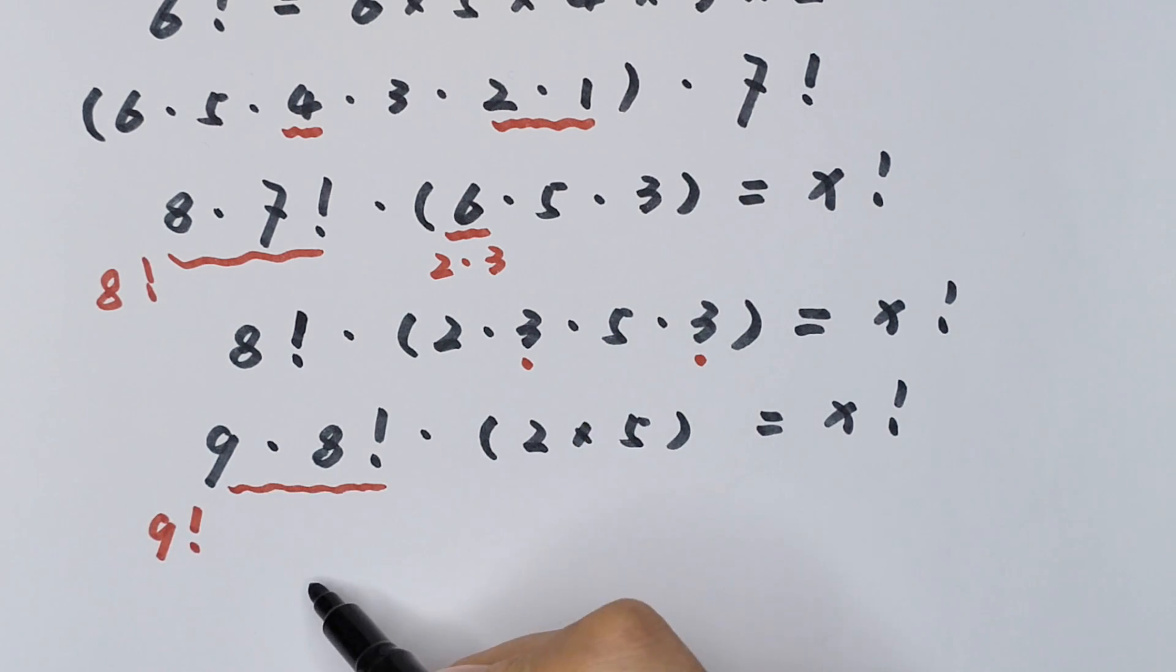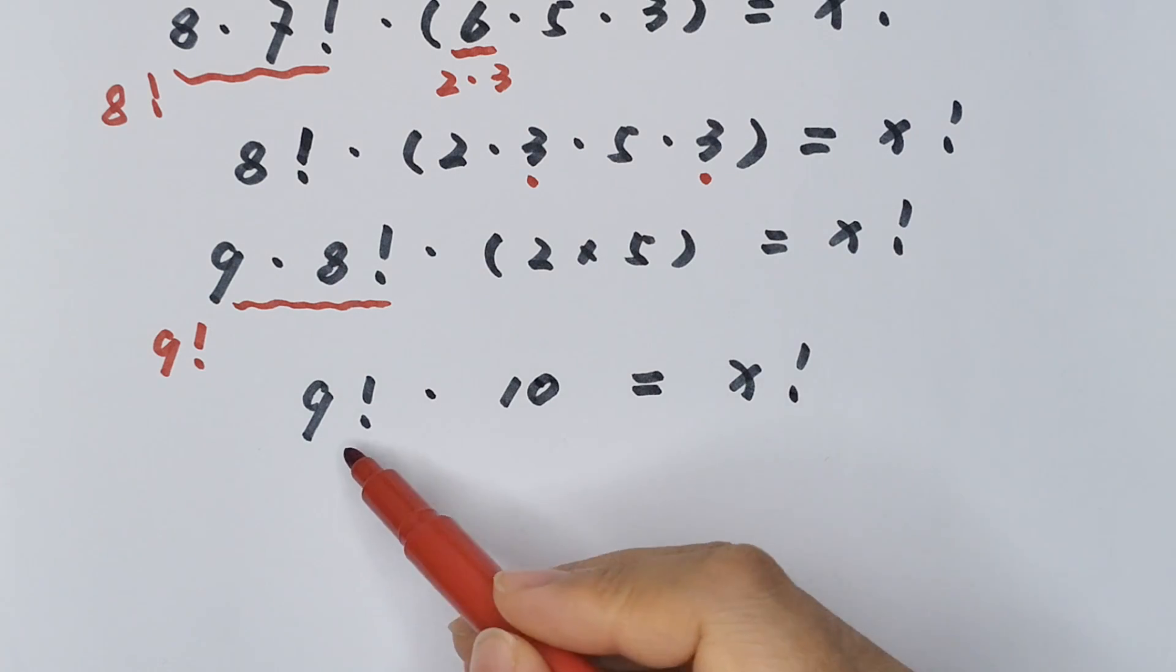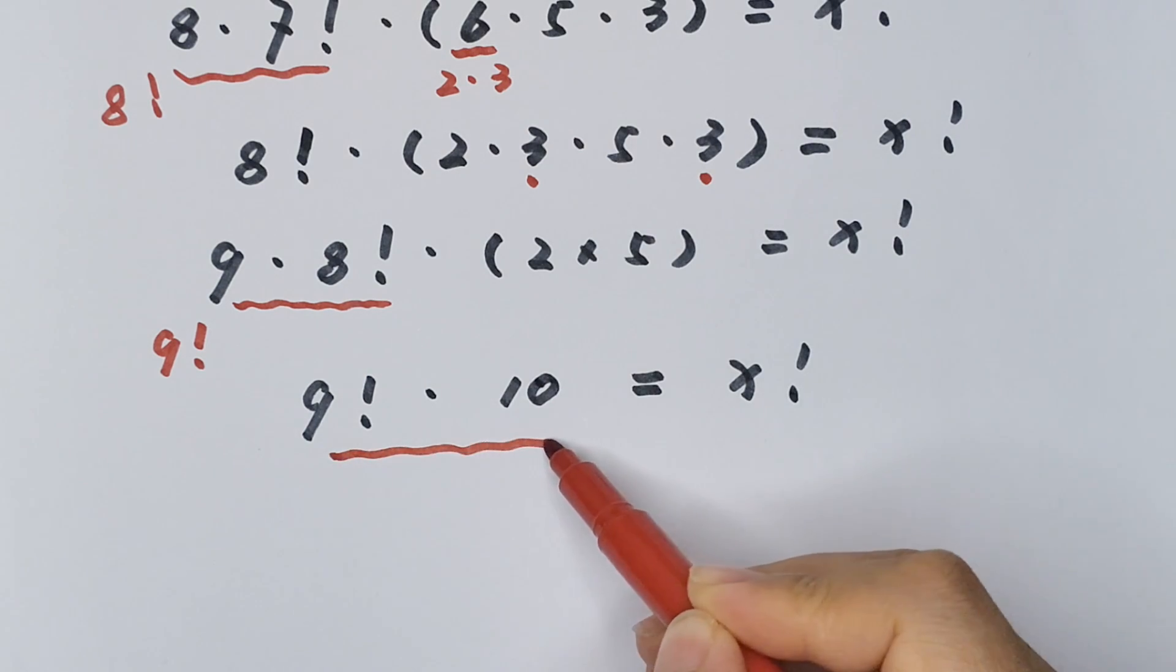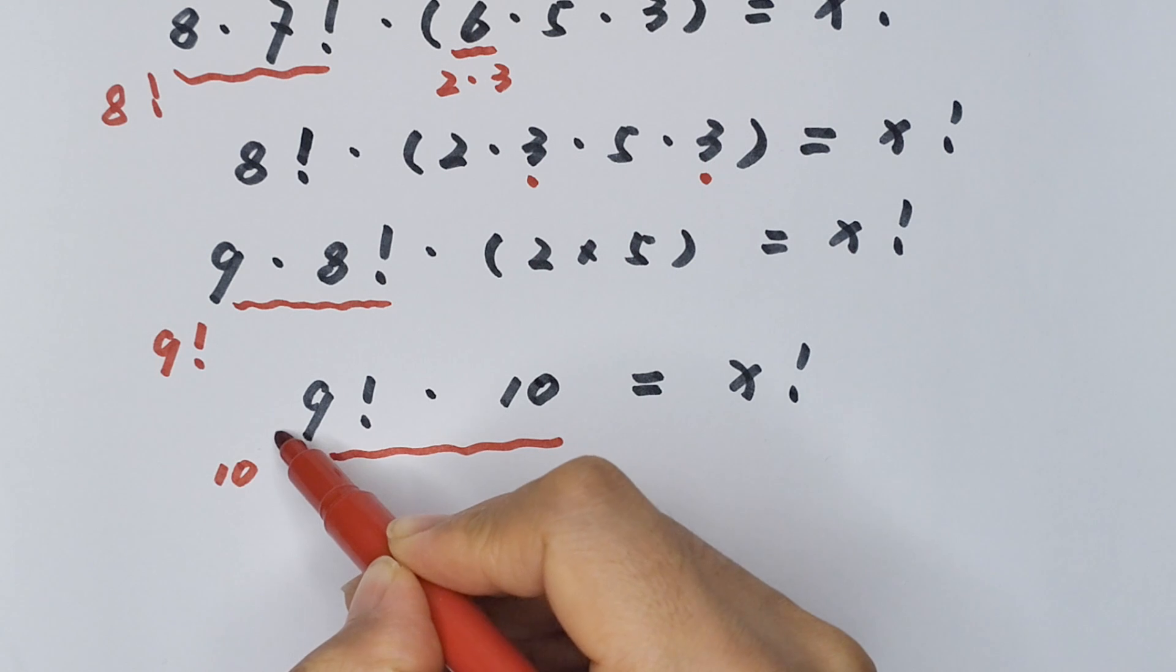So 9 times 8 factorial times 2 times 5... 2 times 5 is 10, equals x factorial. We know 9 factorial times 10 is 10 factorial.